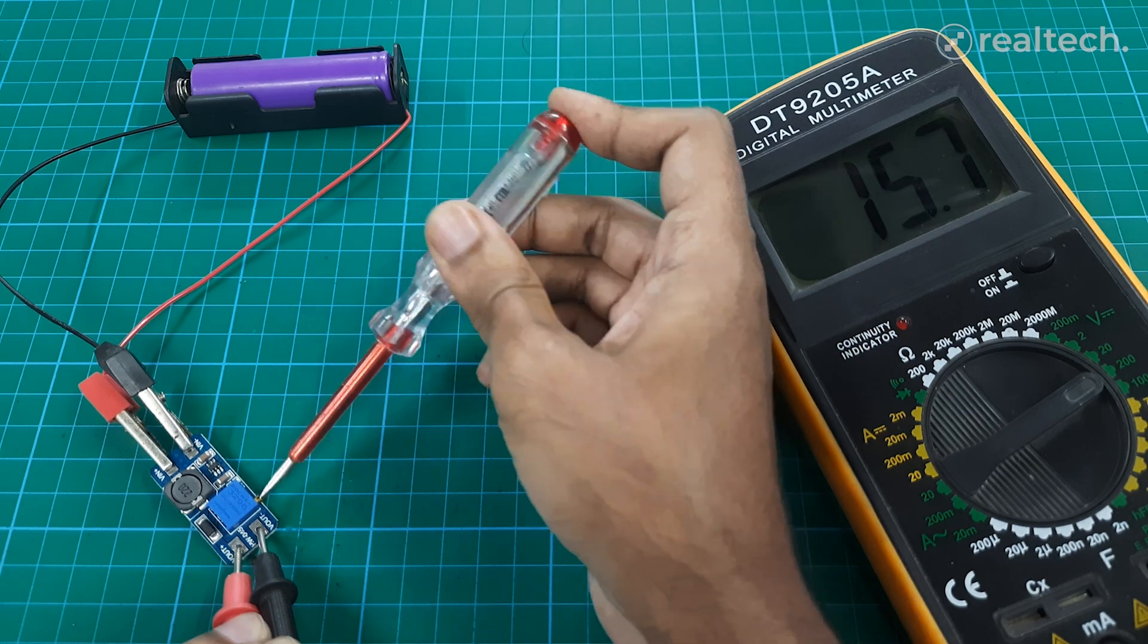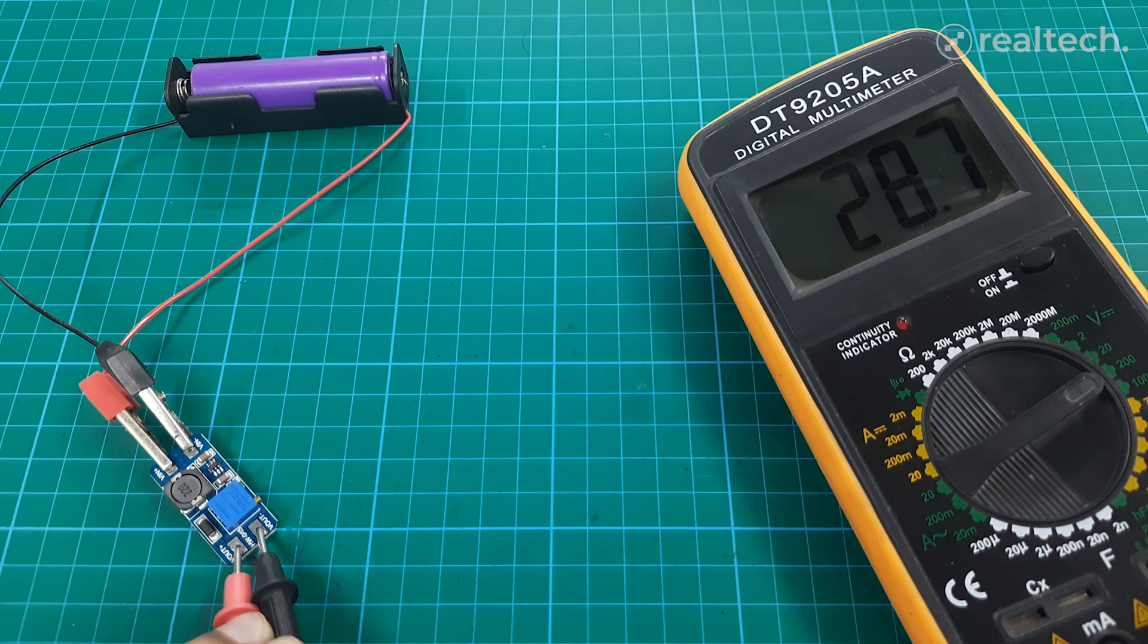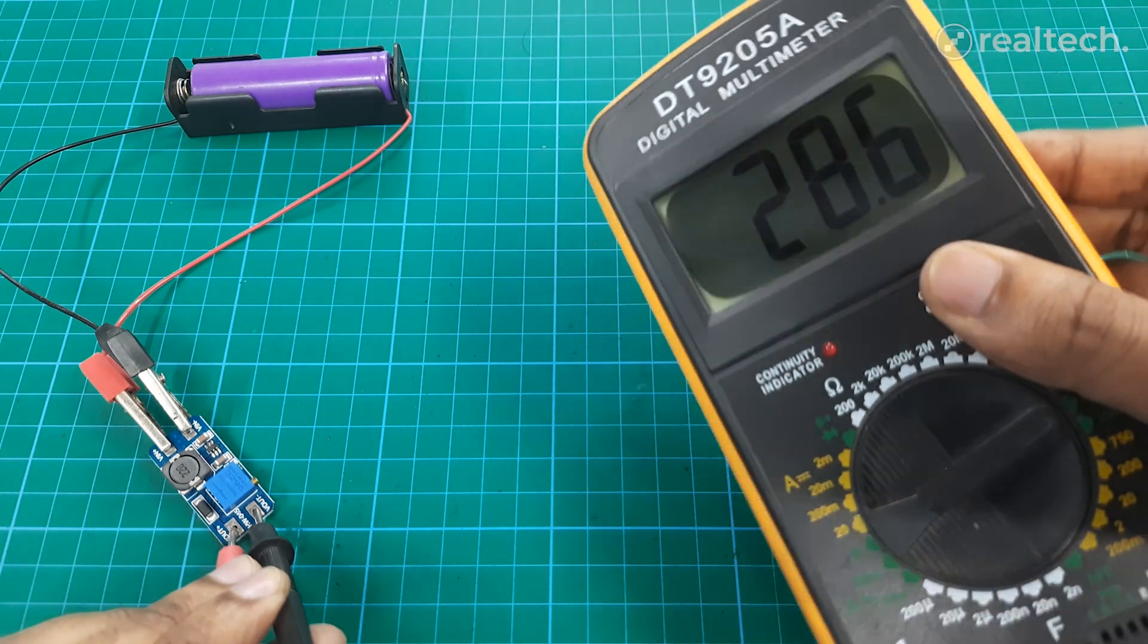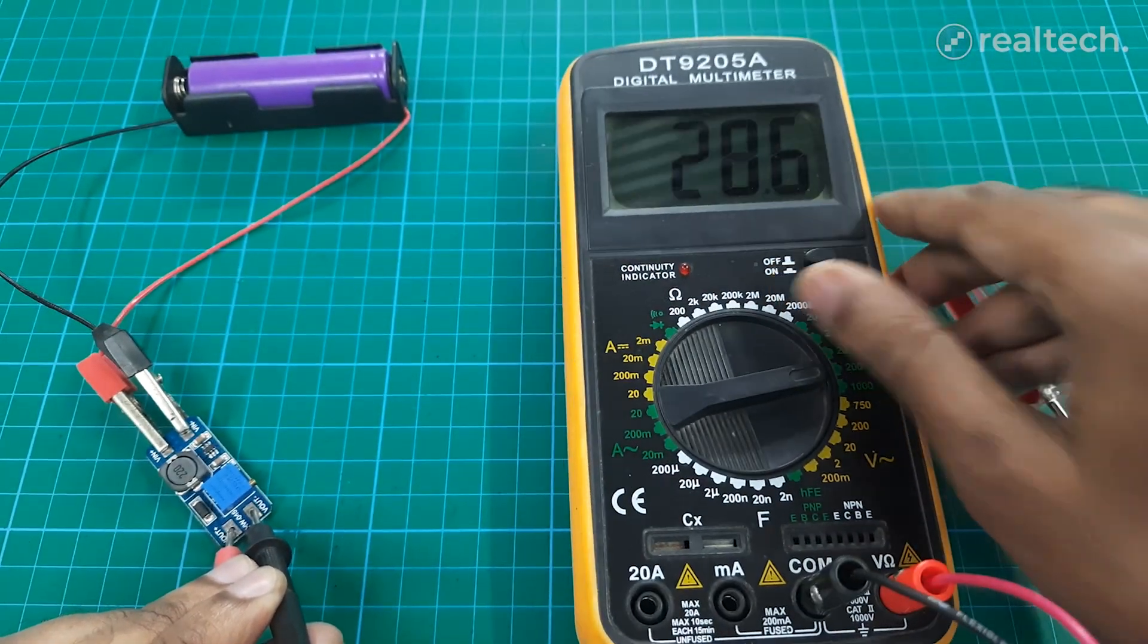The module features an adjustable potentiometer for output voltage control and includes over current and over temperature protection. Its small size and high versatility make it more popular for DIY electronics and hobbyist applications.